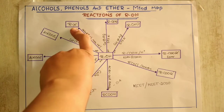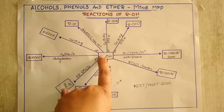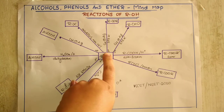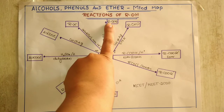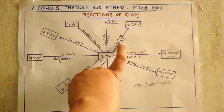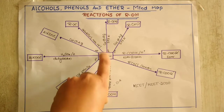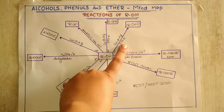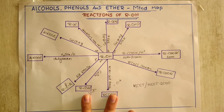To summarize: tertiary alcohol treated with copper or silver gives alkene; secondary alcohol treated with copper or silver at 573 K gives ketone; primary alcohol treated with copper or silver at the same temperature gives aldehyde. So primary alcohol gives aldehyde, secondary alcohol gives ketone, and tertiary alcohol gives alkene in the presence of the same reagent (Cu or Ag).